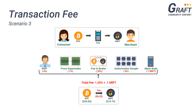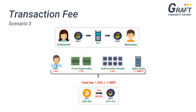For our third example, let's assume the same scenario, only instead of the consumer paying with Bitcoin, they would prefer to pay with Graft. In this scenario, the merchant would no longer need to use a pay-in broker, and the total overall transaction fee would drop down from 1.25% plus 0.1 Graft to 1% plus 0.1 Graft. Using a $20 Graft transaction as an example, the merchant would only pay a fee of 20 cents and receive a total of $19.80 in Graft.